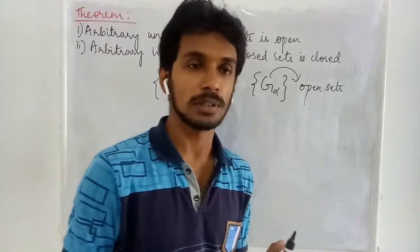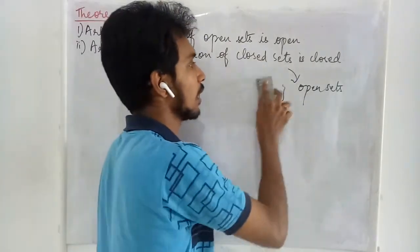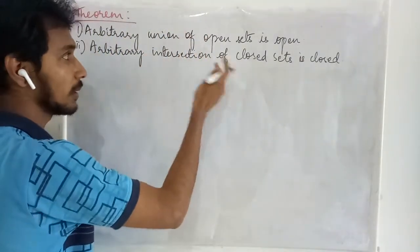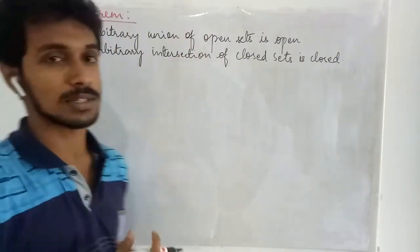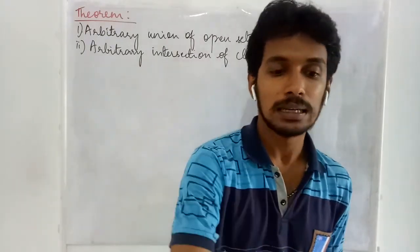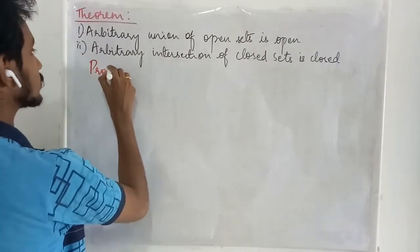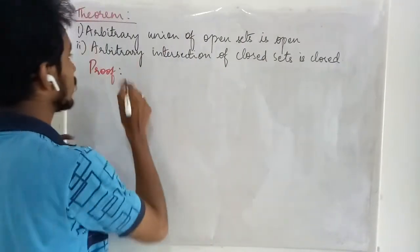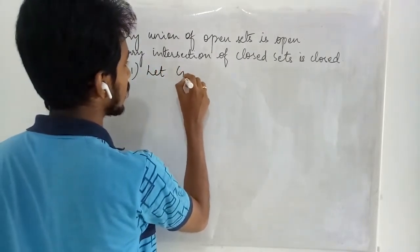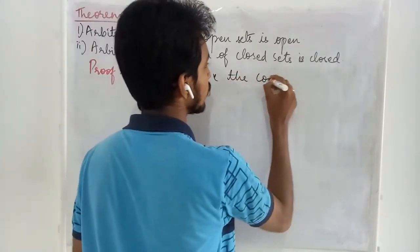This is what we are going to prove in this theorem. In continuation, we will also explore what happens when we take the intersection of open sets and the union of closed sets — that we will see in the upcoming lectures. Now, let us start the proof. Let us take the collection G_alpha to be the collection of open sets.